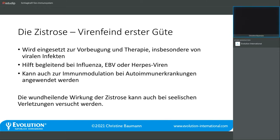Die Zistrose ist traditionell auch bekannt als stark wundheilende Pflanze. Bei Wunden, die sich nicht richtig verschließen, bei Wundheilungsstörungen, kann man symptomatisch versuchen, mit der Zistrose die Wundheilungskräfte zu aktivieren. Das gilt auch für die Schleimhäute, weshalb Zistrose durchaus interessant ist bei Leaky-Gut-Patienten. Bei erhöhter Durchlässigkeit der Darmschleimhaut kann Zistrose als Komponente helfen, diese Lücken wieder zu verschließen.